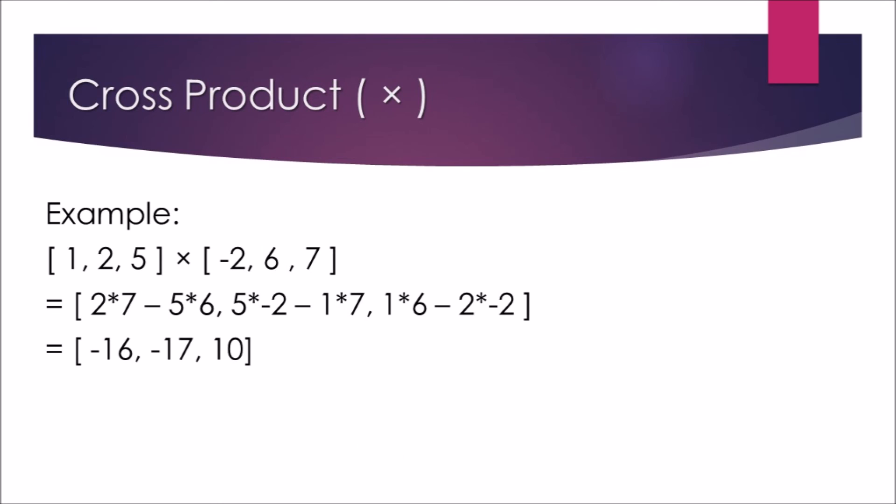Example: find the cross product of two vectors, one with the elements 1, 2, and 5, the other with the elements -2, 6, and 7. As you can see, each of the elements of the cross product is calculated, and the result is the three-dimensional vector of -16, -17, and 10. If you need more time to study the calculation, please pause this video.